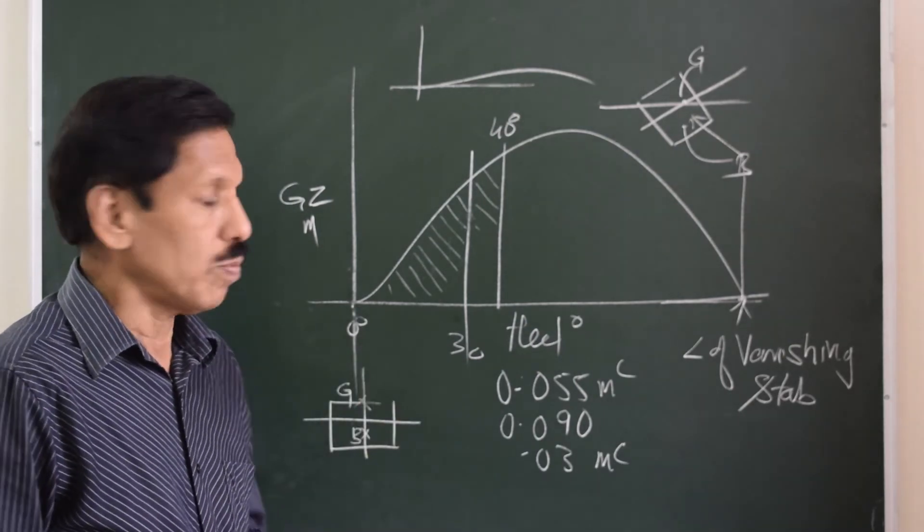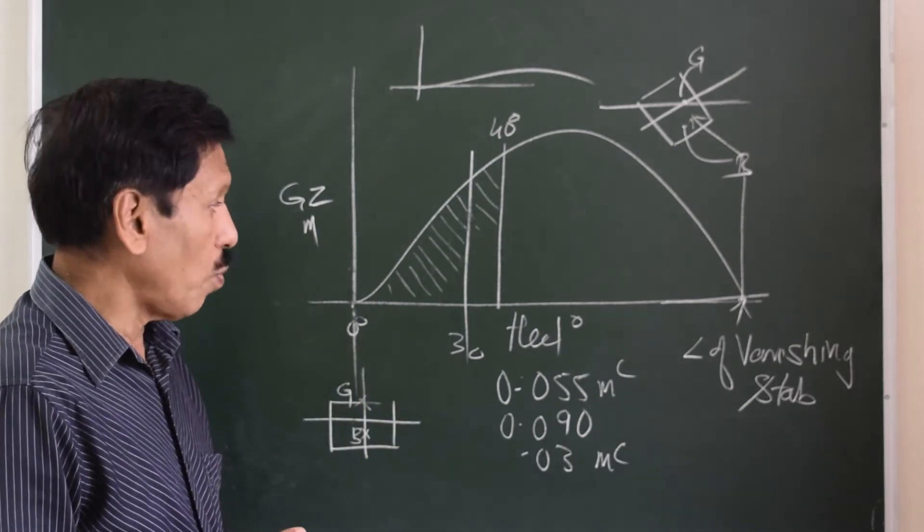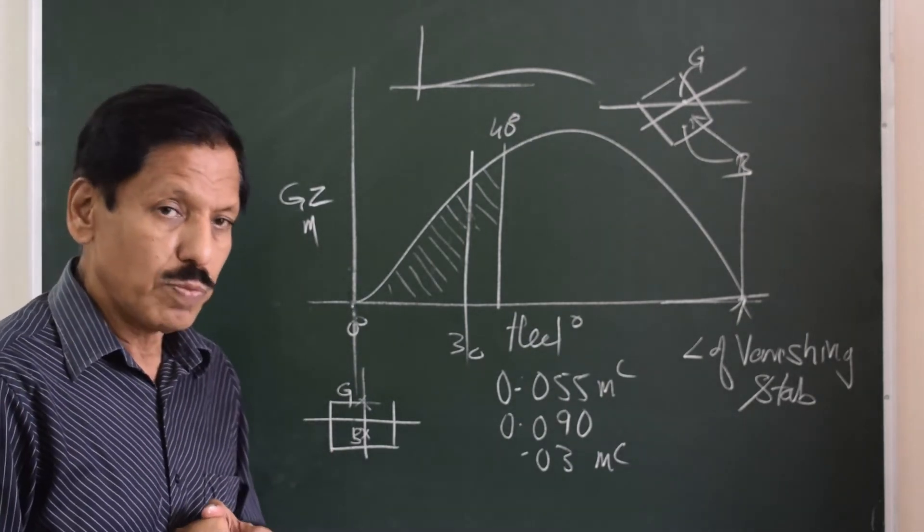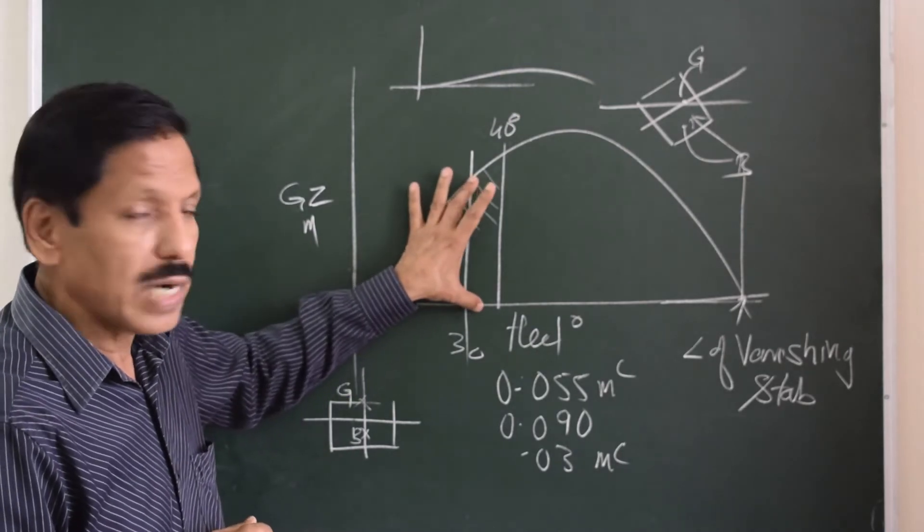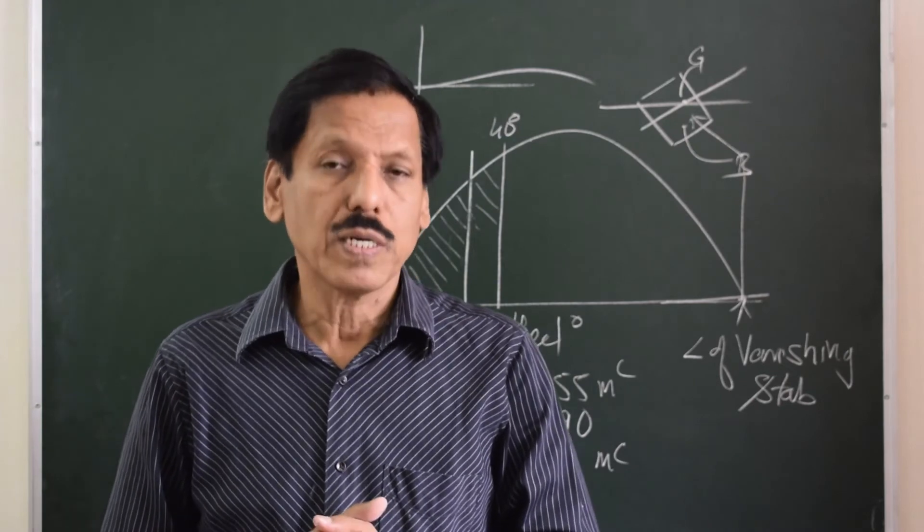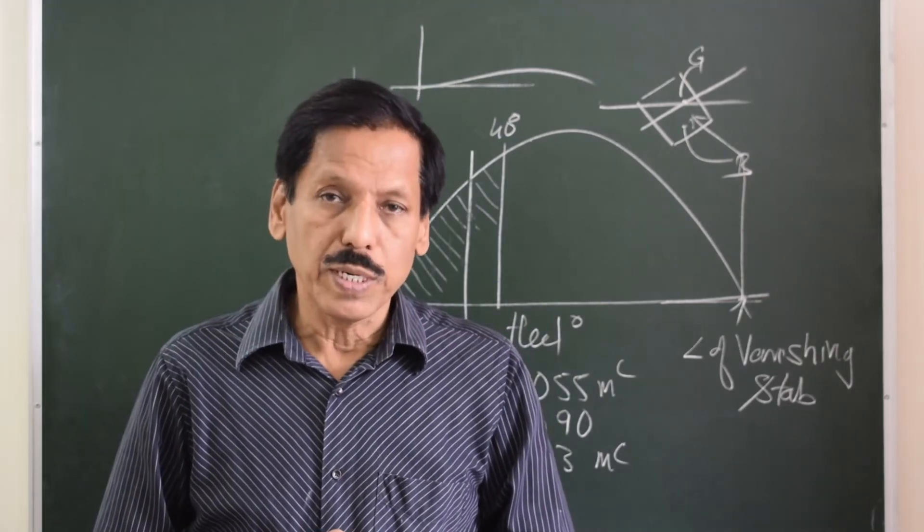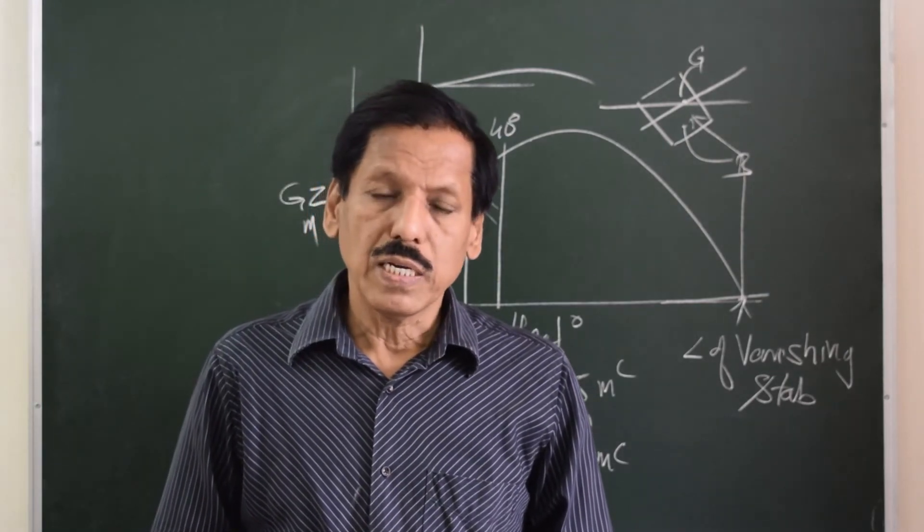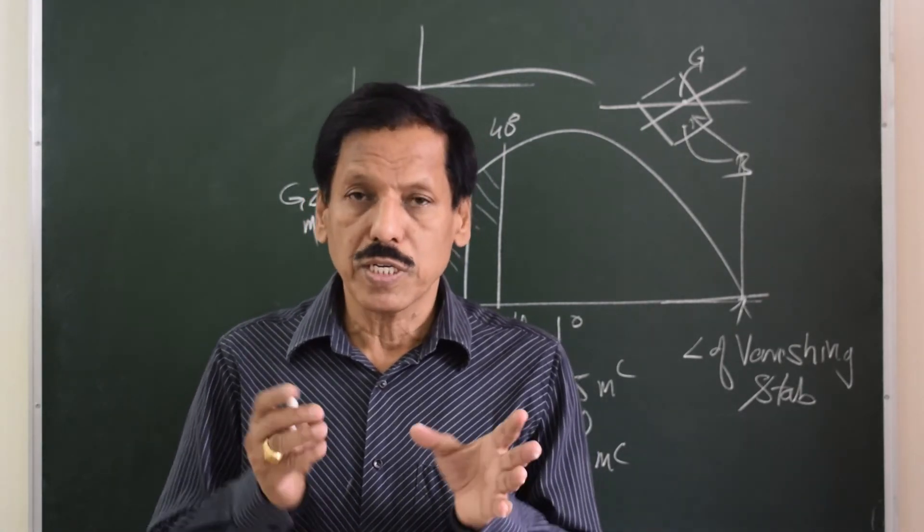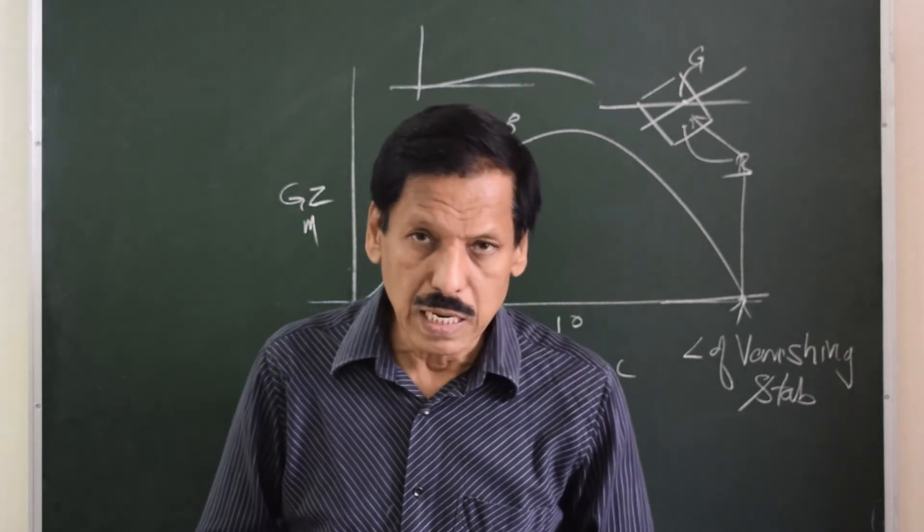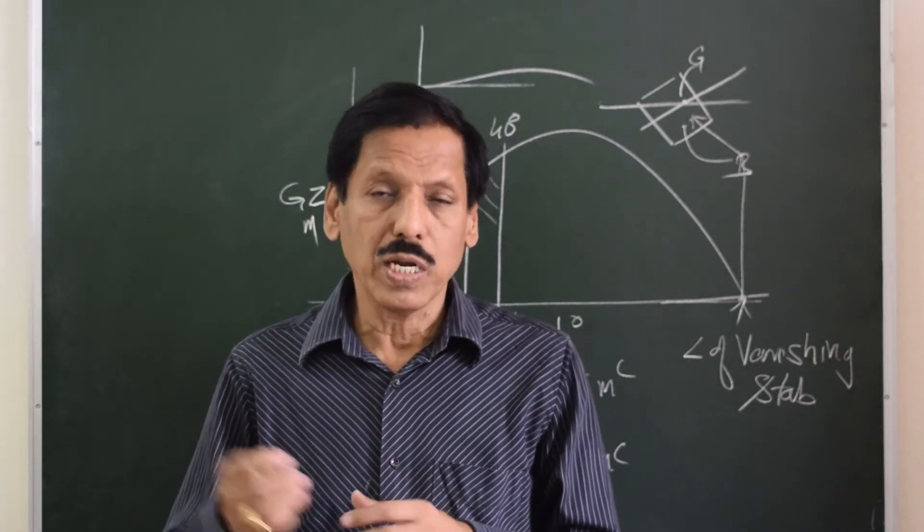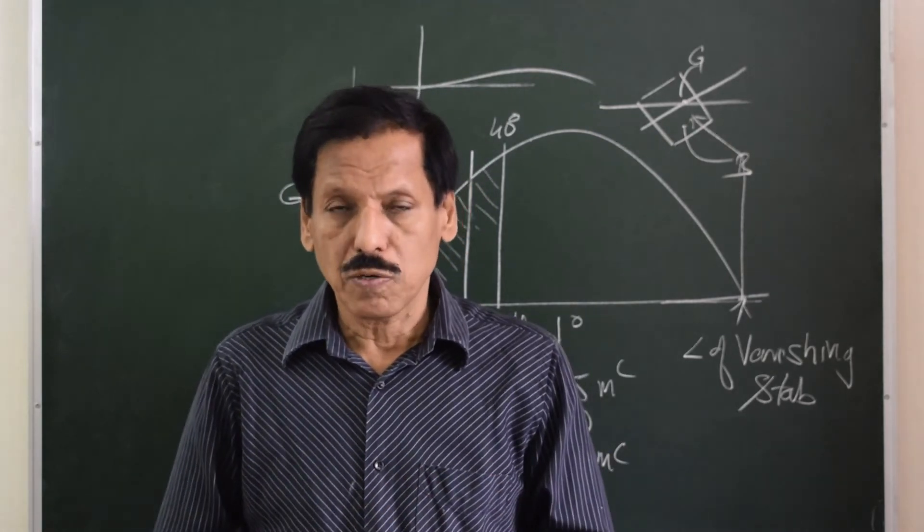Right, so area obtained multiplied by displacement will be tons meter radians—that is a representative of dynamical stability up to 30 degrees. Whereas if I want to know what is the righting capability of the ship at 30 degrees, then I need to multiply displacement with this righting lever. So displacement multiplied by righting lever, the unit is tons meter—that is the righting moment. Naturally it is desired that the ship is not easily heeled. So if the ship's displacement multiplied by the area under the curve is not big, not reasonable, not good enough, the ship will easily heel in the slightest of seas.